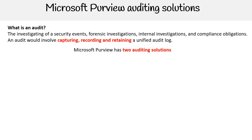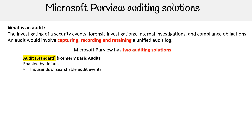Microsoft 365 has two auditing solutions. The first one is Audit Standard, formerly known as Basic Audit, and this is enabled by default. It provides thousands of searchable audit events and has a 90-day audit record retention.